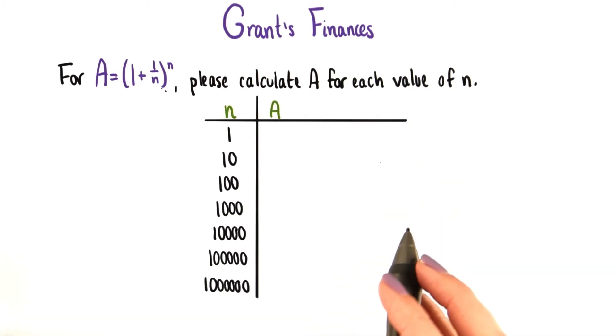Now I'd like us to see what happens if we let n increase. Let's plug in some values to find out. So here's a little table for you to help me fill out. For each value of n here, please plug it into this equation to find the value of A that goes with it.